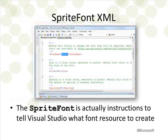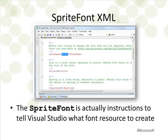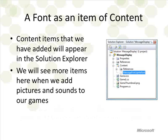A Sprite Font is actually a little snippet of data which tells Visual Studio how to make the font resource — how big it is and where it comes from. This little message is then used by Visual Studio to build that font when the program is actually created. There are two things that are important here: the name of the font we're going to use and the size of the characters. Once we've got those, we'll find that we have a new piece of content called MessageFont sitting inside our Content directory.